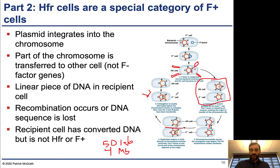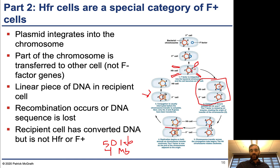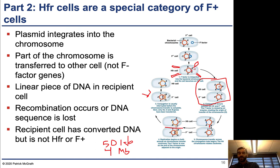The F- cell now has its intact original chromosome but also has a piece of DNA that exactly matches part of the chromosome, except for any allelic differences between the Hfr cell and the F- cell. We designate the Hfr versions as capital A and capital B, and the original F- versions as lowercase a and lowercase b to indicate the same genes but with probable nucleotide variation between the two strains.